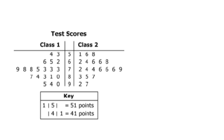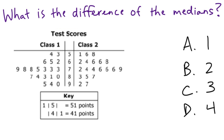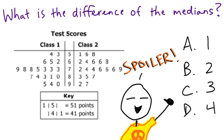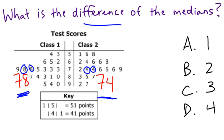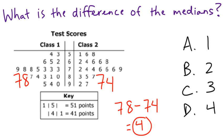Here's problem two. This time they give us some math test scores. Class one has their scores, class two has their scores. We're going to do the same thing — what is the difference of the medians? The median of class one is 78, the median of class two is 74. We just need to count to the middle value in each case and subtract. The correct answer is D.